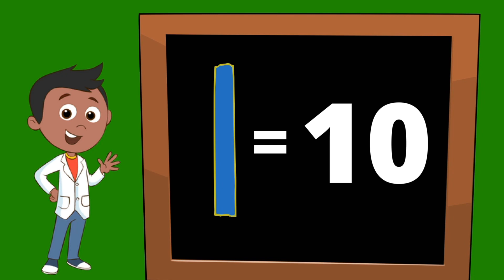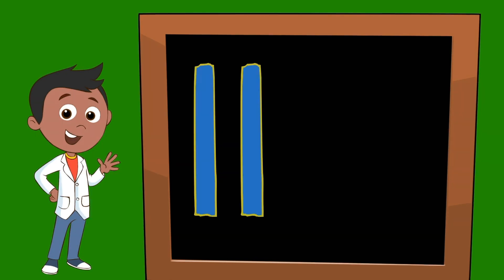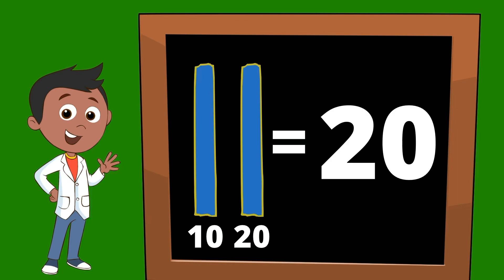So how do we count ten sticks? If we have two ten sticks, then the first one would count as ten, and the second one would count as twenty. Two ten sticks would be equal to twenty.